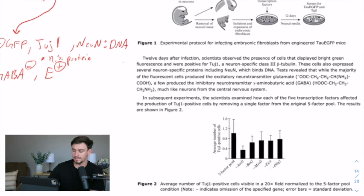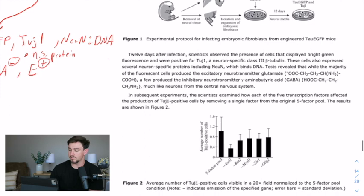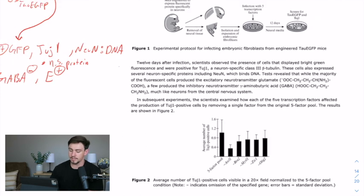So moving on, it says in subsequent experiments, the scientists examine how each of the five transcription factors affected the production of 2 to 1 positive cells by removing a single factor from the original five-factor pool. So here, they're just kind of describing their approach to gathering these results, to what the experiment really is. And then it tells us that the results are shown in figure two.